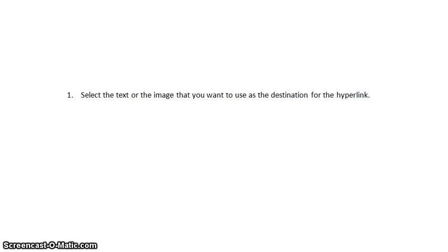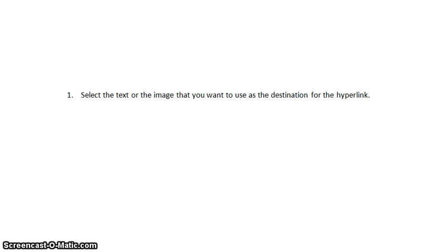First, select the text or image that you want to use as the destination for the hyperlink. In this case, our answers on page number six is the destination. So I'll select it. This is page number six and I want to create the hyperlink here, so I select this. This is our destination for the hyperlink.